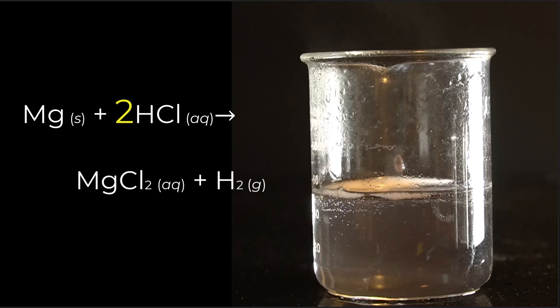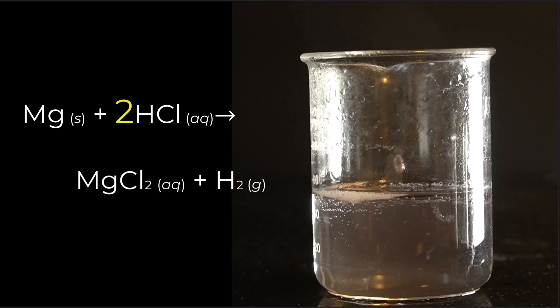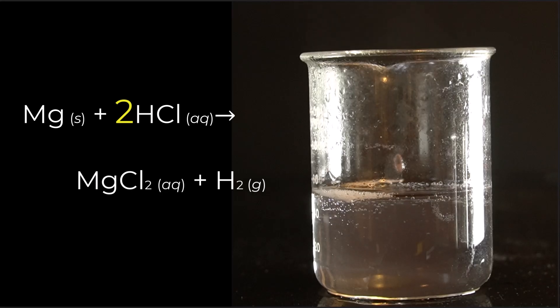At this point, almost all of the magnesium has reacted, just a little bit left. We have MgCl2 aqueous—that's the clear liquid—and all the hydrogen gas, the H2, has escaped. This is Dr. B reacting magnesium ribbon with hydrochloric acid. Thanks for watching.